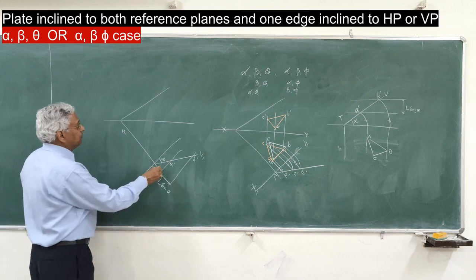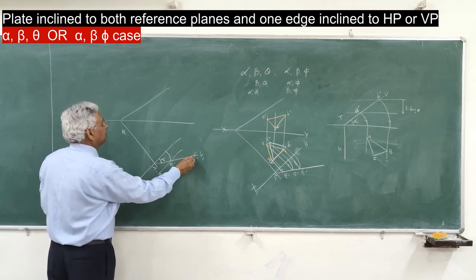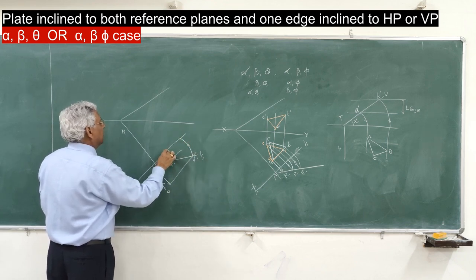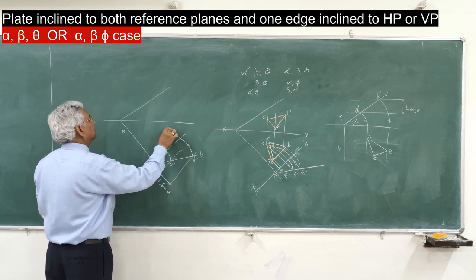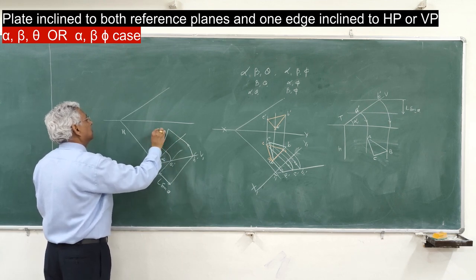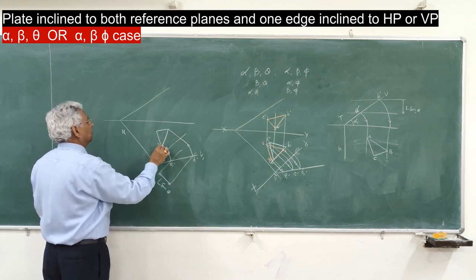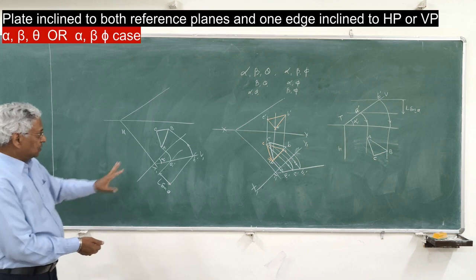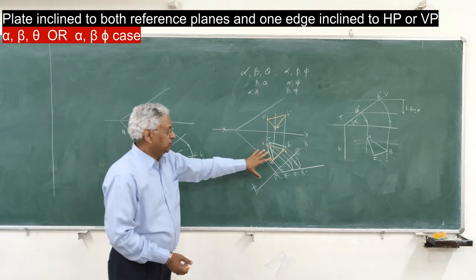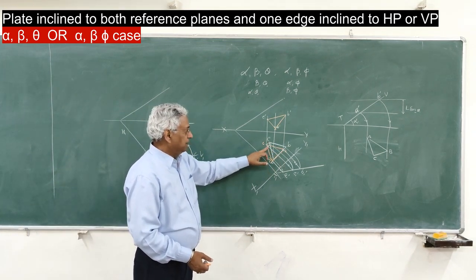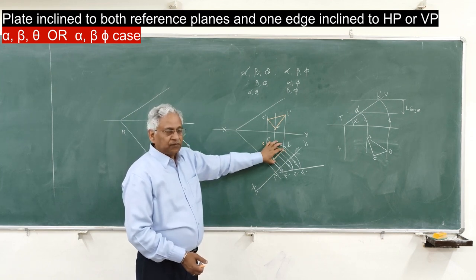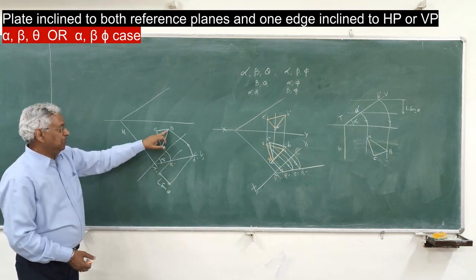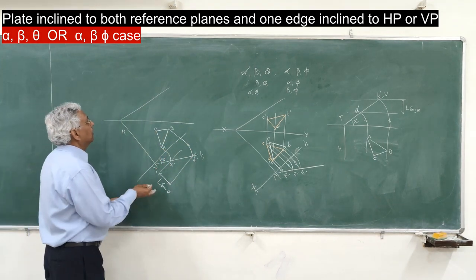Rotate these points about T1 and bring them onto the ground line, then complete the plate. Complete the shape of the plate — let us say ABC is the plate. Now we have come to this stage: when you place the plate ABC in the horizontal plane, its elevation will be on the ground line.